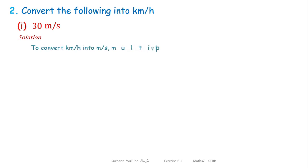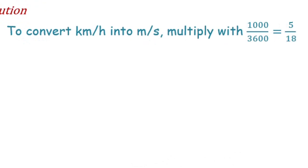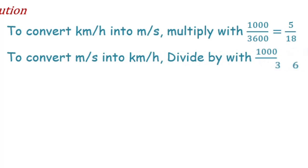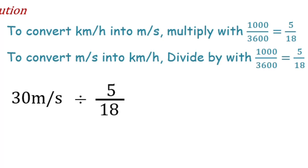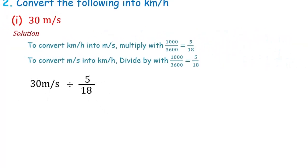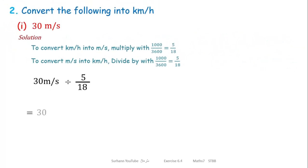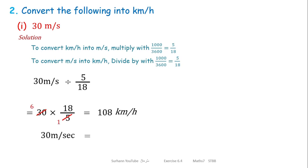Always remember: to convert kilometer per hour to meter per second, multiply the given value by 1000 over 3600, or 5 over 18. To convert meter per second into kilometer per hour, divide by 5 over 18, or equivalently multiply by 18 over 5. So 30 meter per second divided by 5 over 18 gives us 108 kilometer per hour.